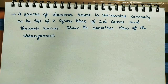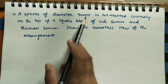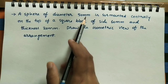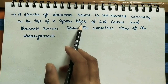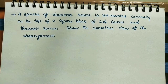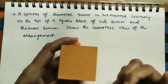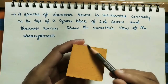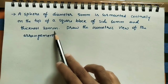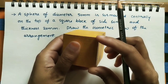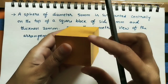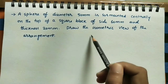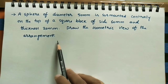Let us take the given data initially, after which we will do the isometric diagram. A sphere of diameter 50 mm is mounted centrally on the top square block of side 60 mm, so each side of the square block is 60 mm — that is 6 centimeters — and the thickness is 20 mm. This square block thickness is 2 centimeters. Draw the isometric view of the arrangement.